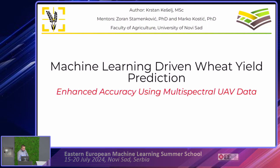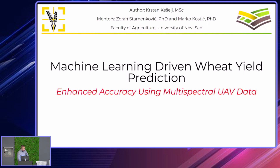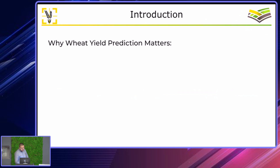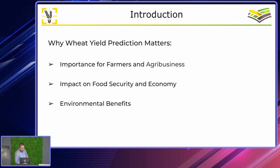You may have heard yesterday about wheat yield prediction from our colleagues. It's not something new, but it's something interesting because there is still space to improve the accuracy of models. I thought about three things to point out: importance for farmers and agribusinesses, impact on food security, economy, and environmental benefits.